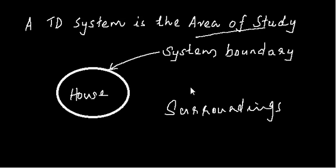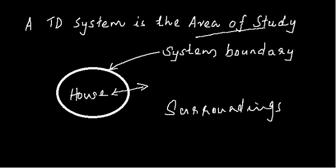You define the system, you define the system boundary, and you define the system surroundings. Systems can be classified based on the transfers across the system boundary. A system can be classified broadly into three types: open, closed, and isolated.